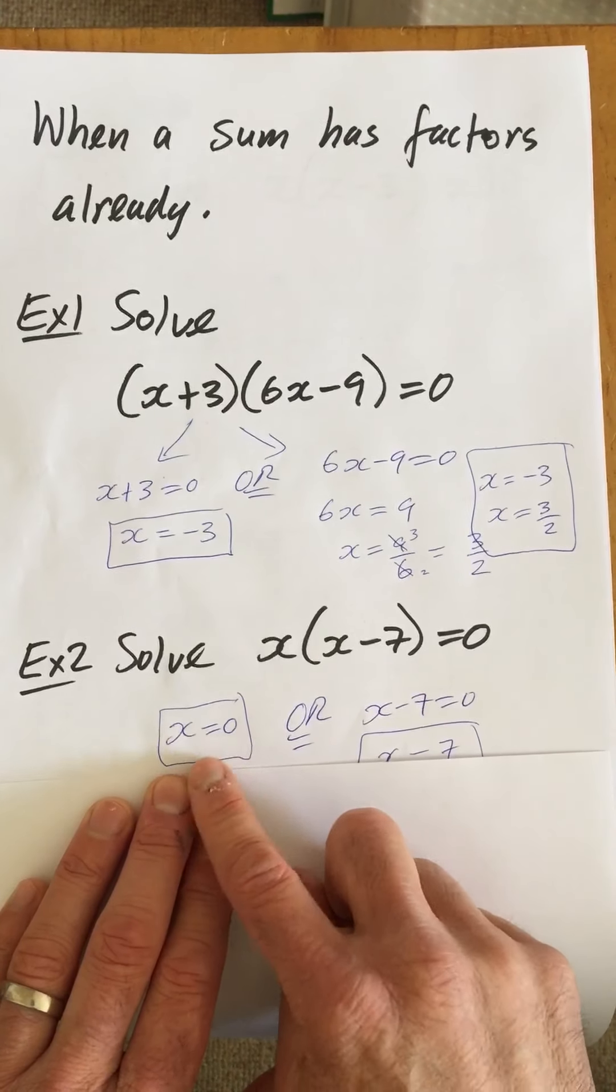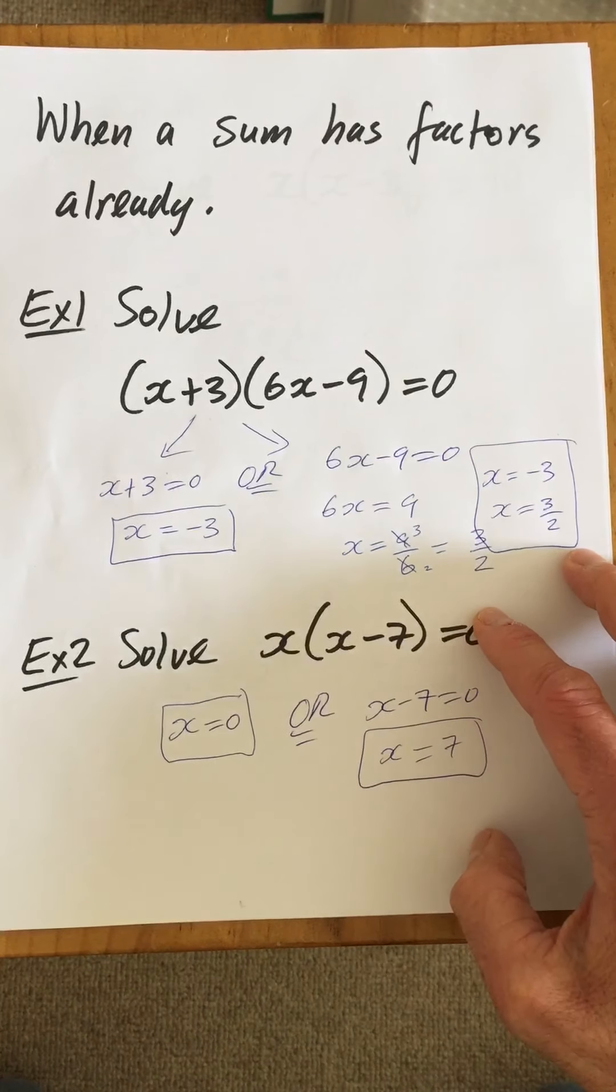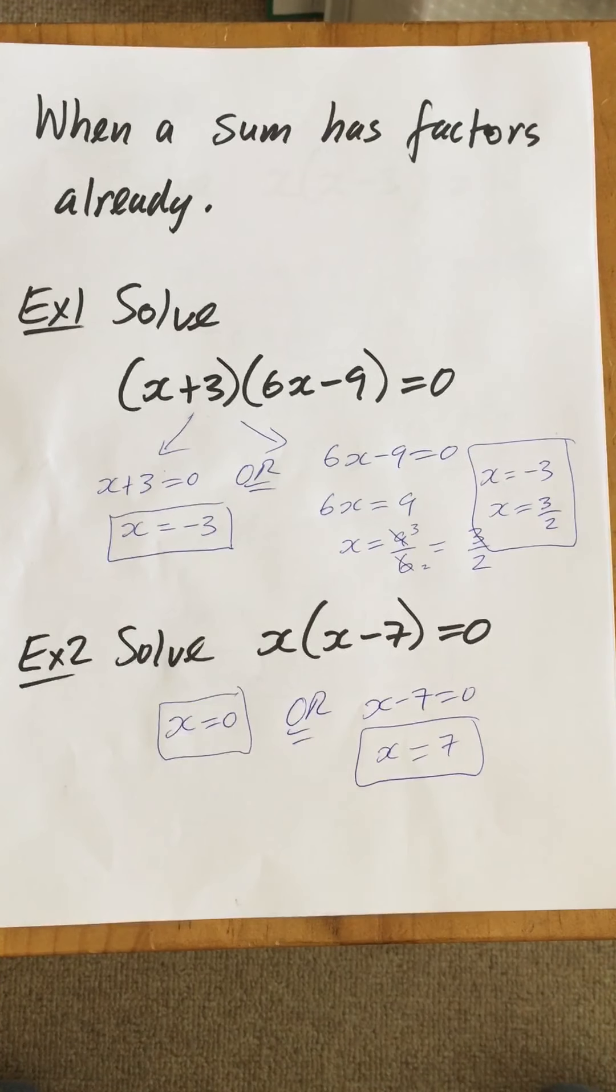This one is solved. x is zero. This one we have to get the minus 7 over to the other side and we get x=7. So they're the two roots of this sum.